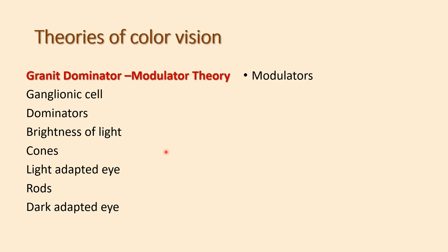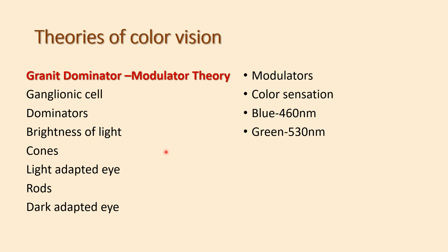Ganglionic cell modulators are responsible for different color sensations. Modulators of blue are stimulated by light with wavelength 460 nanometers. Modulators of green are stimulated by light with wavelength 530 nanometers. Modulators of red are stimulated by light with wavelength 590 nanometers.